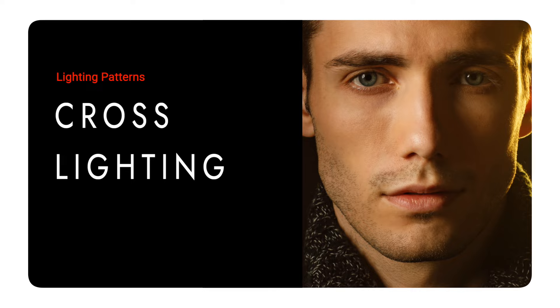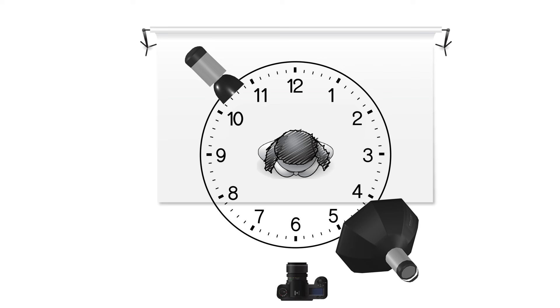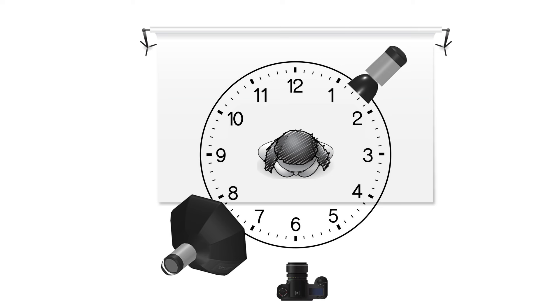To achieve cross lighting, place the main light source at 4 or 5 o'clock and an edge light at 10 or 11 o'clock — or you could flip it. This technique creates a dramatic image with a three-dimensional look.